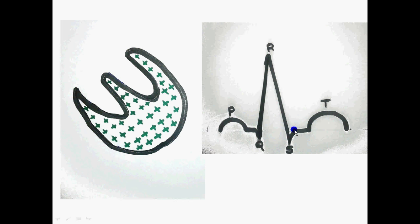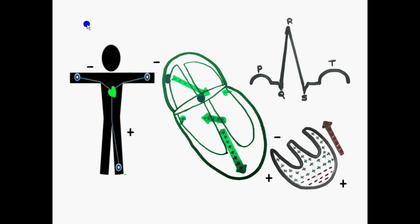Now it's time for repolarization — the cells start regaining negativity, from outwards to inwards, producing a negative vector directed towards the negative terminal. When a negative vector moves toward the negative terminal, we get a positive deflection — the T wave. So we have formed the normal ECG pattern.